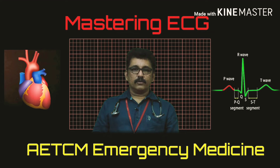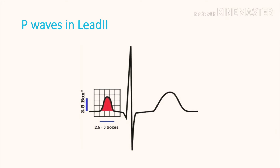P-waves originate from the SA node or atrium. Normally P-waves are dome-shaped, semi-circular. The height of the P-wave is 2.5 small squares on ECG grid, and the width of the P-wave should be 2.5 to 3 small squares.